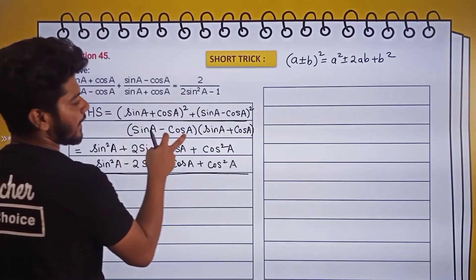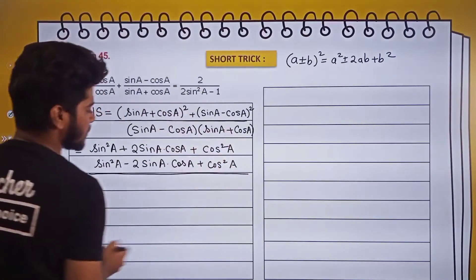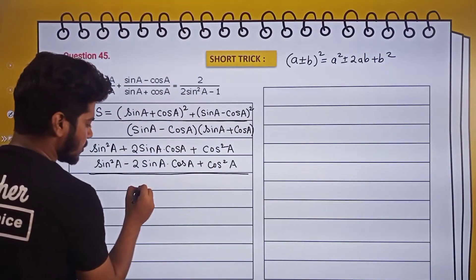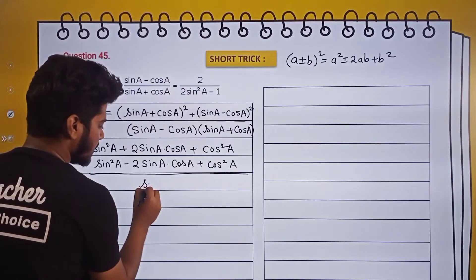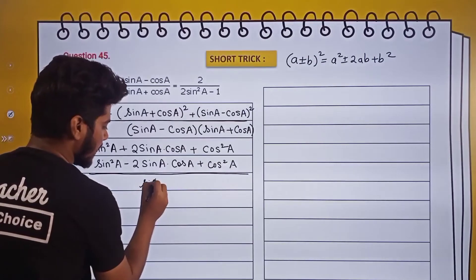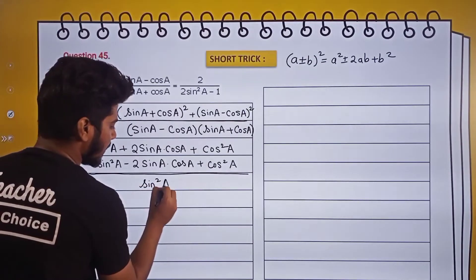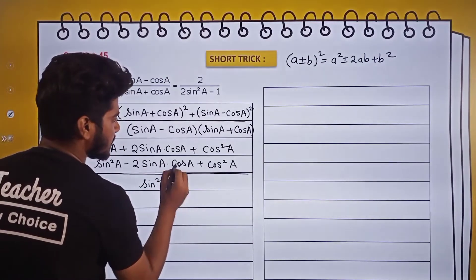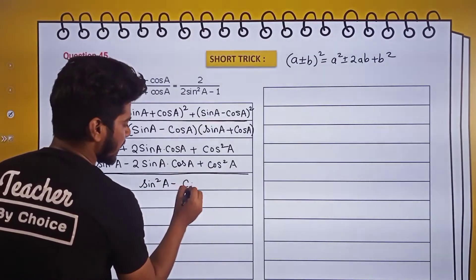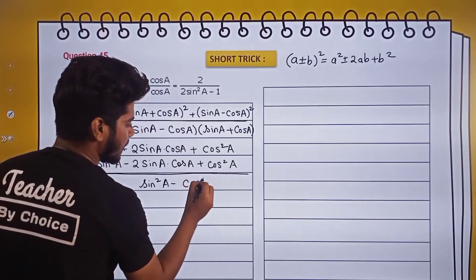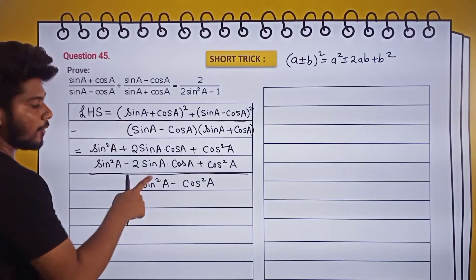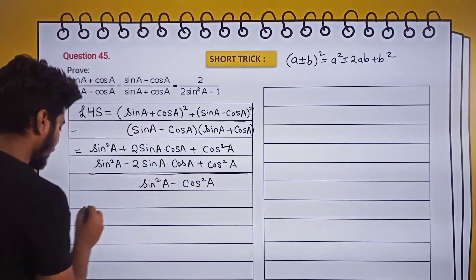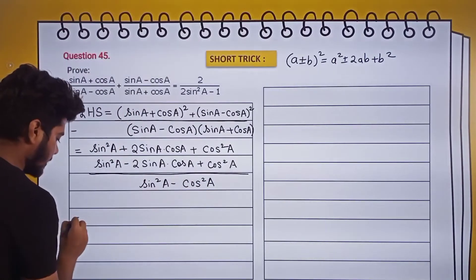Now let's talk about the denominator. This is of the form (a - b)(a + b), so we can write it as sin²A - cos²A.